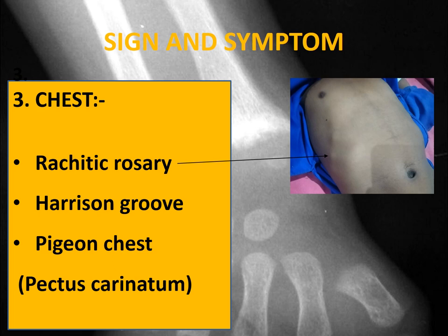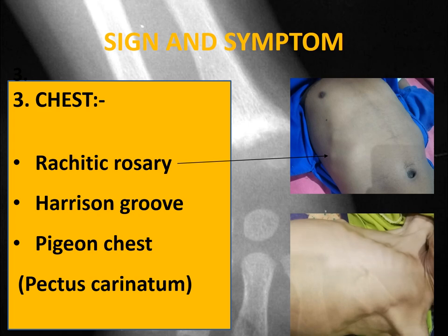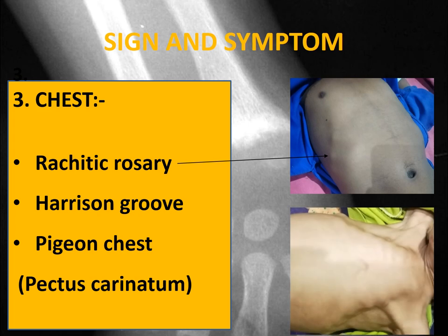Harrison's groove is an indentation at the level of the diaphragm, also characteristically seen in patients of rickets. The shape of the chest is like a pigeon chest, or we can say pectus carinatum. It is due to the prominence of the sternum and ribs. In this picture you can see the child is having a prominent sternum and ribs.